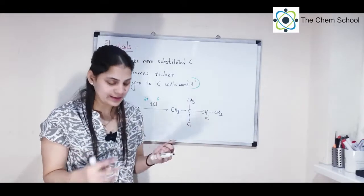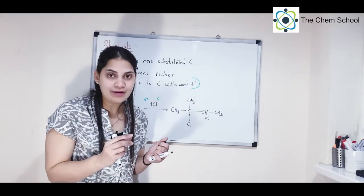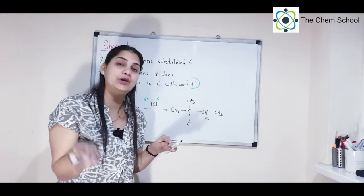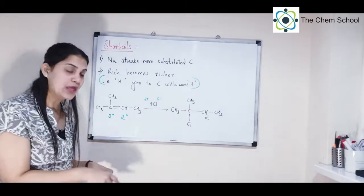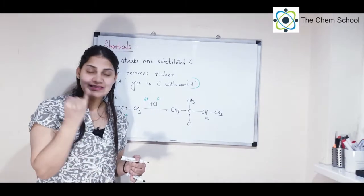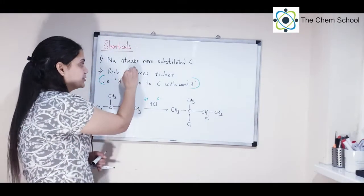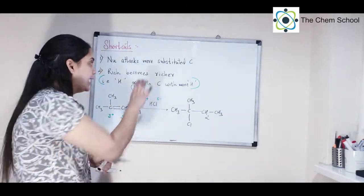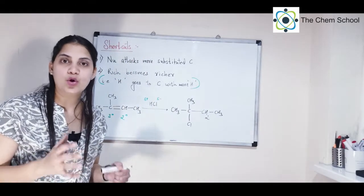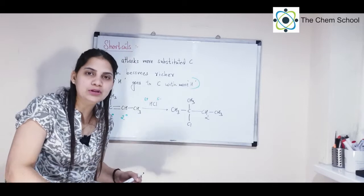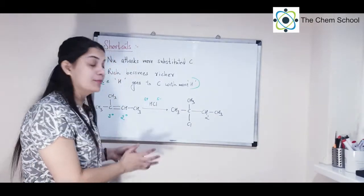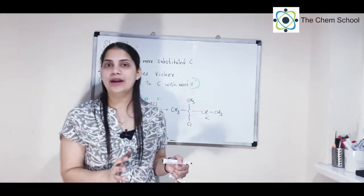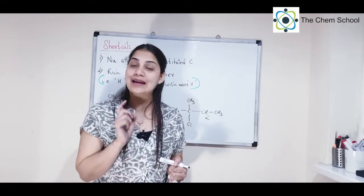So which rule should you follow: stability of carbocation, more substituted carbon, or 'rich becomes richer'? Use the stability of carbocation first, because the shortcut rules may not always give the right answer. For simple problems initially you can use the shortcuts, but in future — especially for entrance examinations — always reason using carbocation stability.